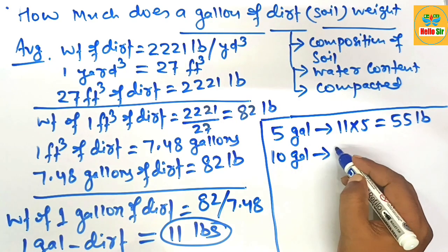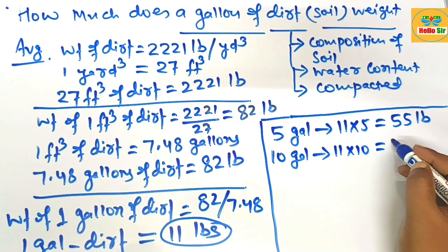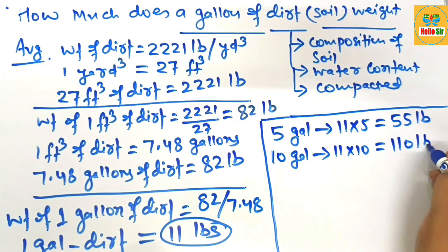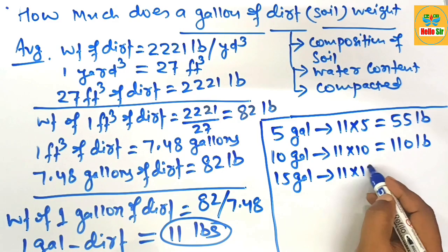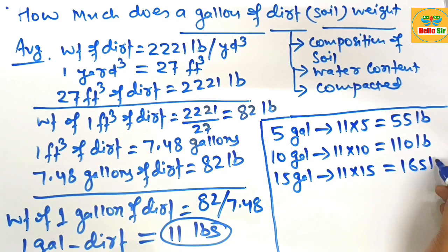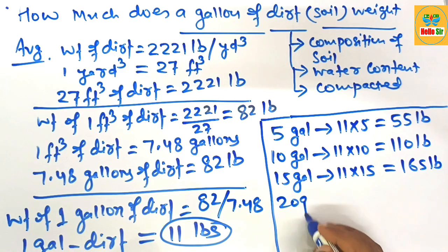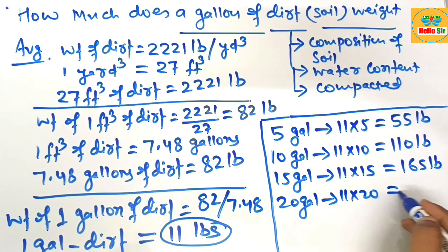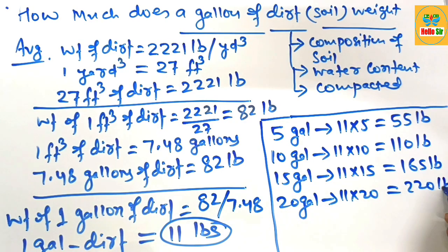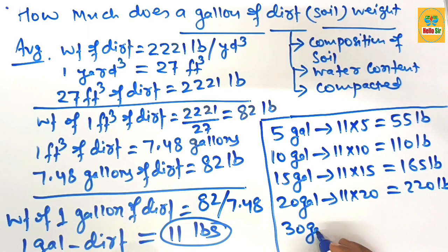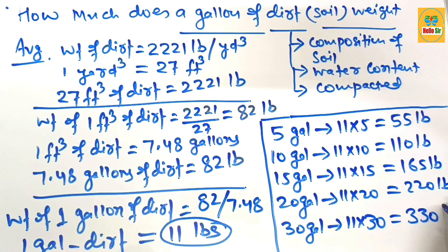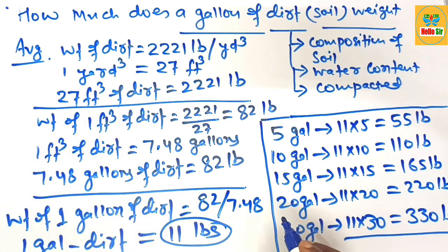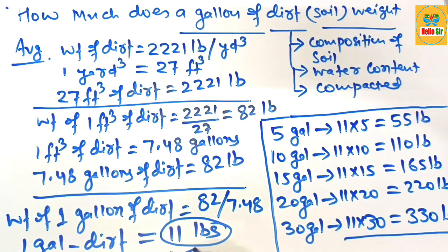Ten gallons of dirt weighs about 110 pounds, 15 gallons of dirt weighs about 165 pounds, 20 gallons of dirt weighs about 220 pounds, and 30 gallons of dirt weighs about 333 pounds. This is the weight of several bucket sizes of dirt, and remember: one gallon of dirt weighs about 11 pounds.